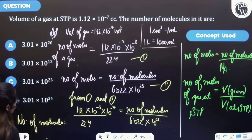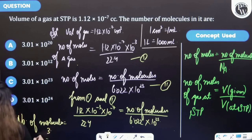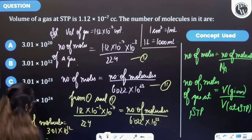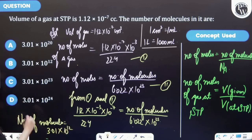3.01 into 10 raised to 20. That means option B is correct, right?